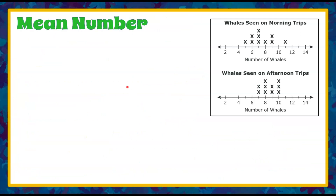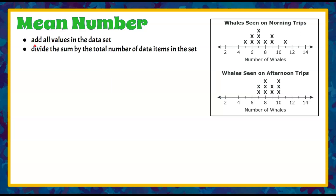Let's clear our screen and separate this out. We're comparing the mean number first. To find the mean or average, we're going to add all the values in the data set and then divide that sum by the total number of data items in the set. Let's look at whales seen in the morning first.